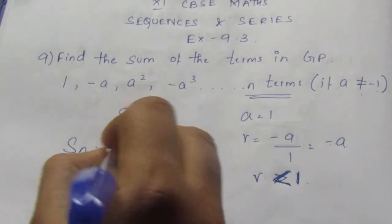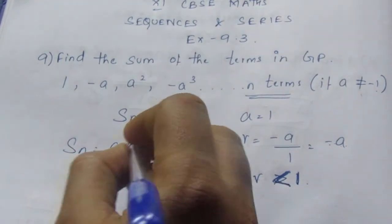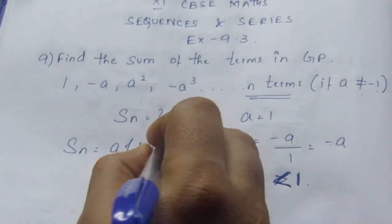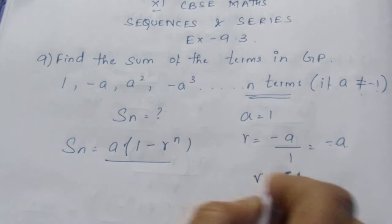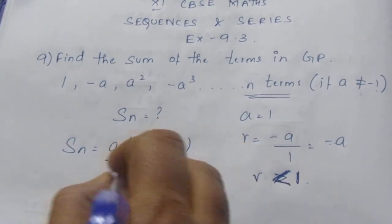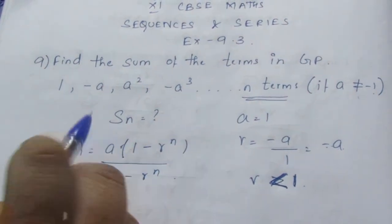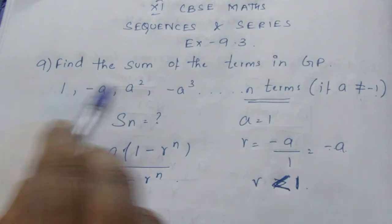Now we can use the Sn formula: a(1 - rⁿ)/(1 - r). Because r is less than 1, we need to use this formula: 1 - rⁿ.